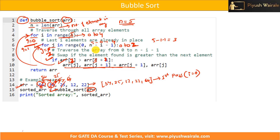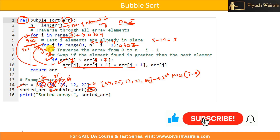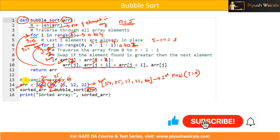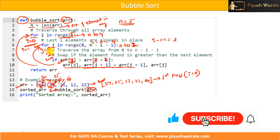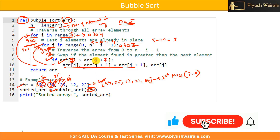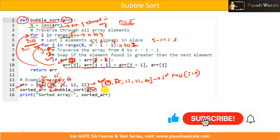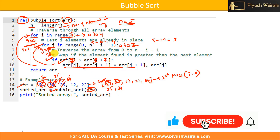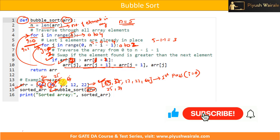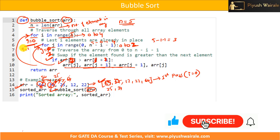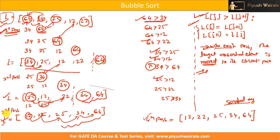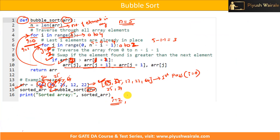With i equals 1, range 0 to 3 means j iterates from 0 to 2. The updated list from the first pass is now our input. We check position 0 against position 1 — if that is true we swap, getting 25, 34, and so on. In this way the code continues checking and swapping through the second pass.